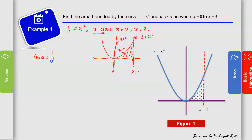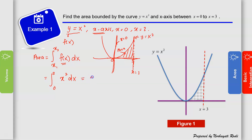The formula for area is the integral from x1 to x2 of f(x) dx. Here x1 = 0 and x2 = 3, and f(x) = x². So we integrate from 0 to 3 of x² dx, which gives x³/3 evaluated from 0 to 3. This equals 3³/3 minus 0, which equals 9. The area of this region is 9.